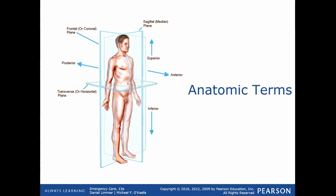Anatomy means the study of body structure; physiology is the study of body function. There are many directional terms used to describe the body. Anterior means toward the front of the body; posterior means toward the back. A vertical plane called the frontal or coronal plane divides front from back. Anything from the middle of the arm or torso forward is anterior; anything behind that line toward the back is posterior.